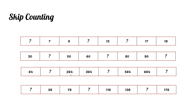The two continuous numbers here are 264 and 364. When we subtract them, the answer is 100. Sixty-four plus one hundred equals one hundred sixty-four, three hundred sixty-four plus one hundred is four hundred sixty-four, six hundred sixty-four plus one hundred is seven hundred sixty-four.